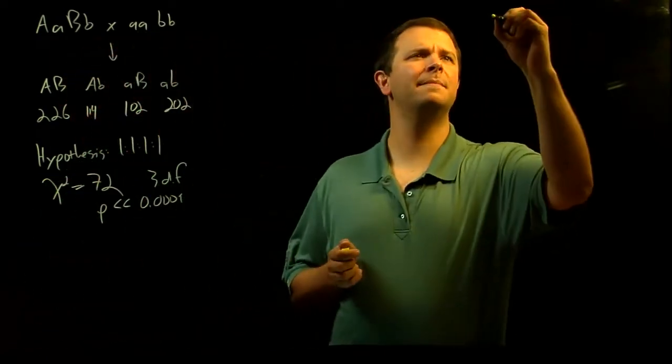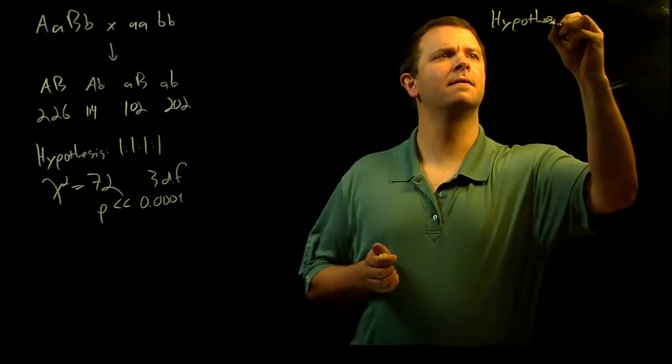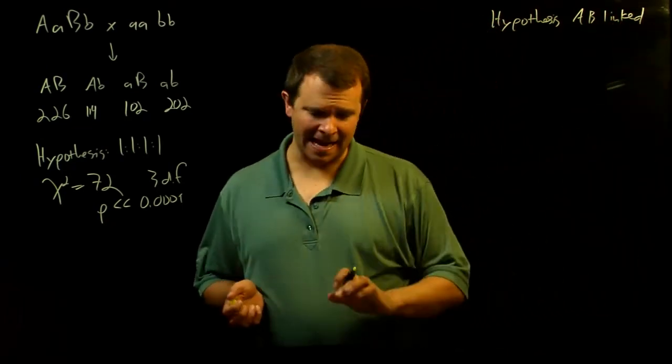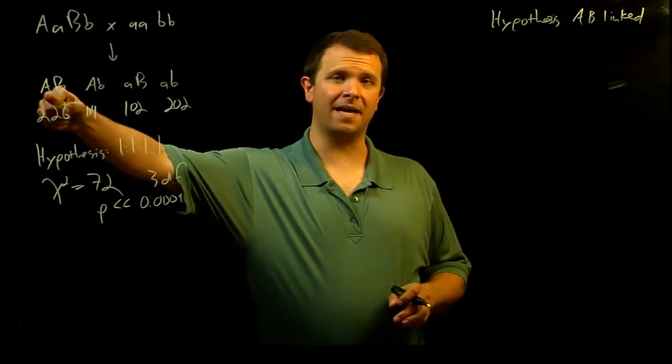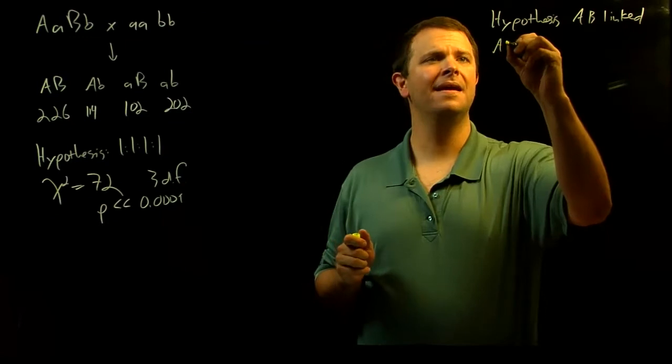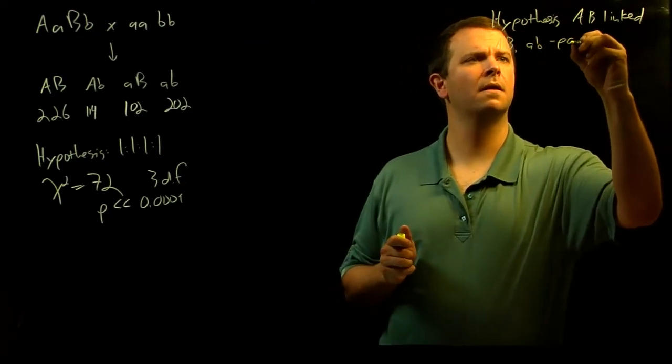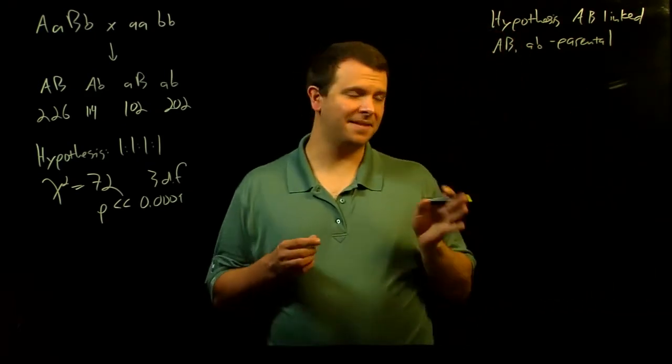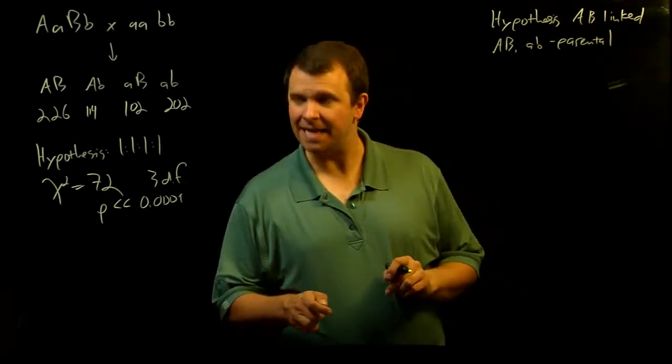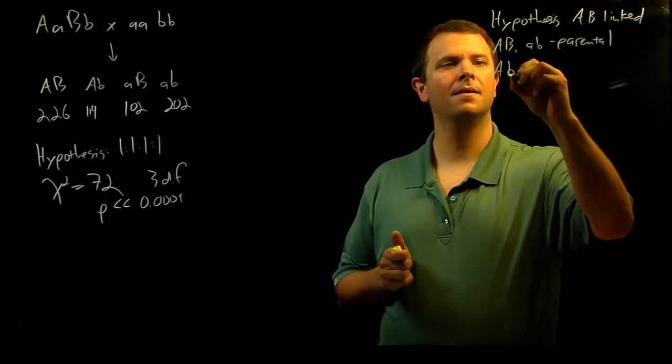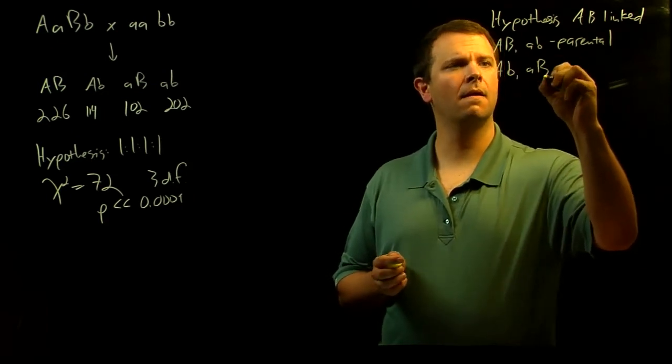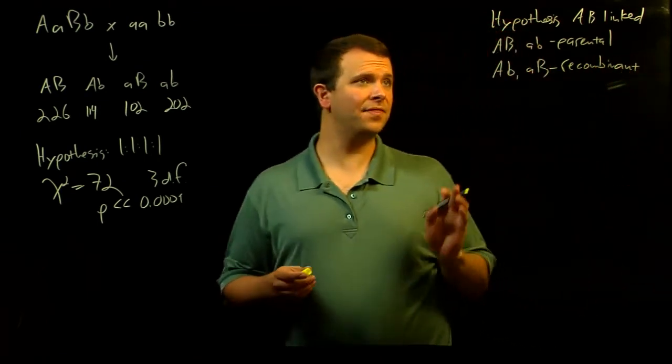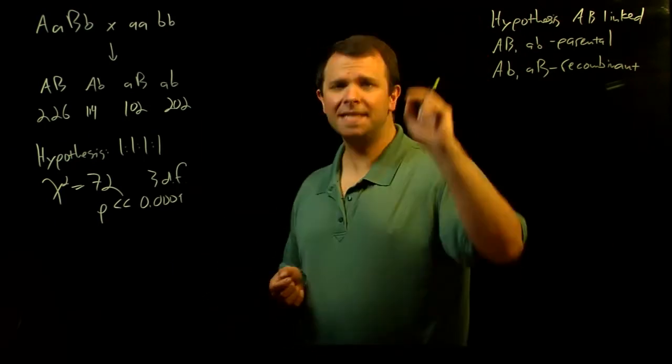If our hypothesis is that A and B are linked, then let's go ahead and choose the homozygous dominant and the homozygous recessive as the parental types. We'll see why in the next video that that assumption makes some sense. And if that's the case, then that means that these types are the recombinants.